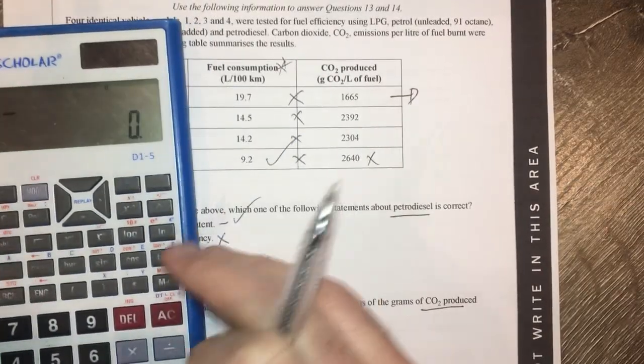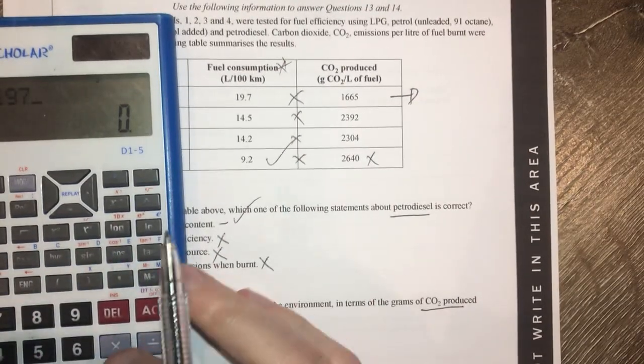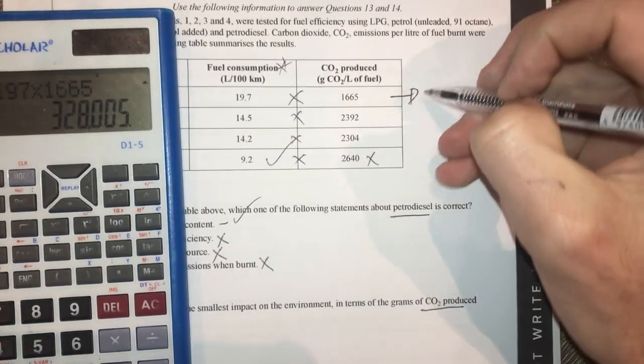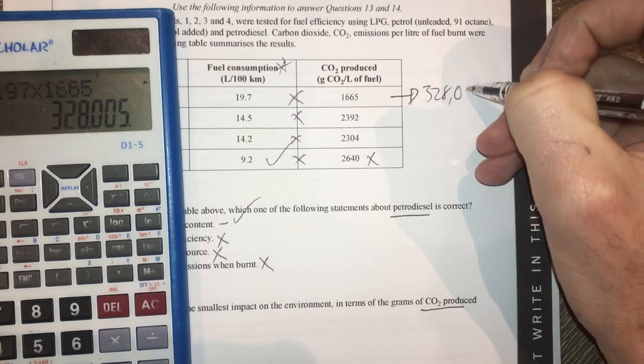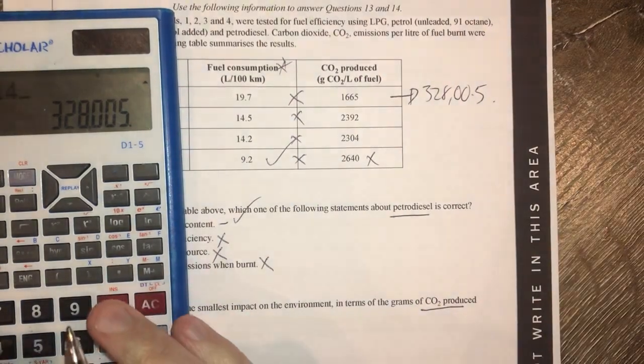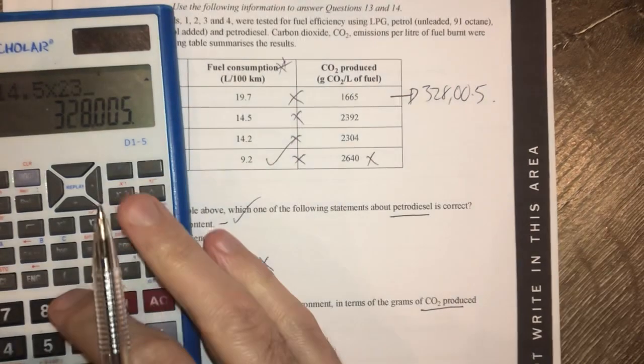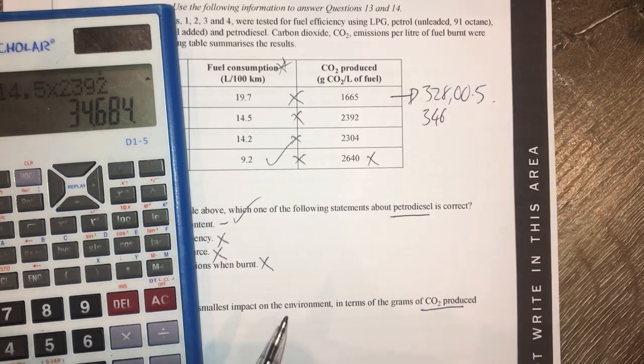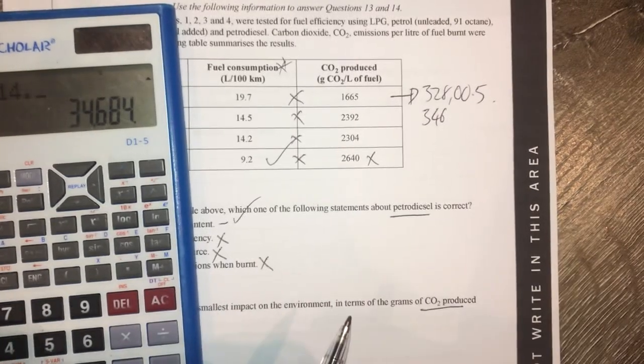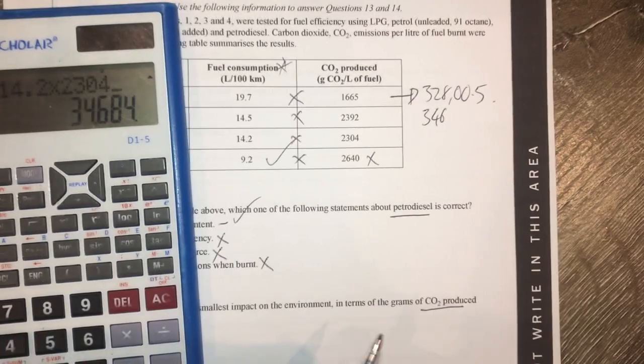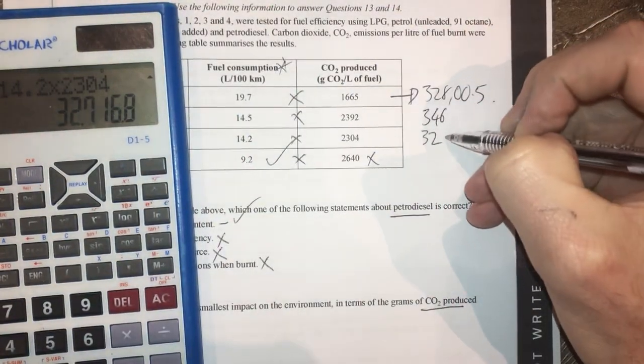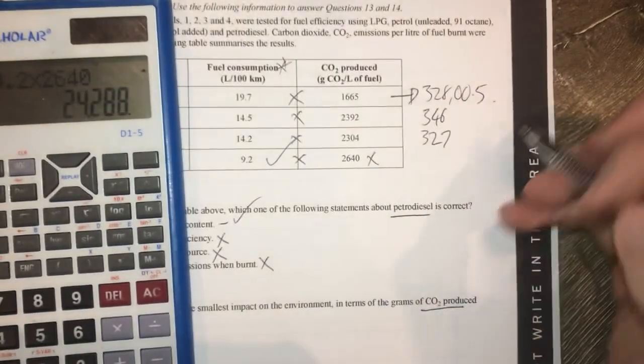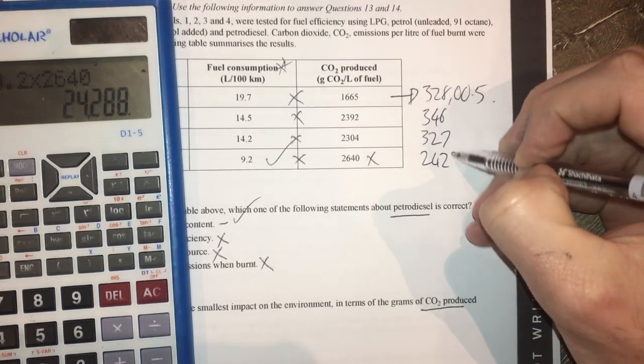So let's have a look at that. Quickly going here. 19.7 times 1665 gives me that. So therefore it's 32800.5. 14.5 times 2392 gives me 346. I'll just do it randomly. 14.2 times 2304 gives me 327.